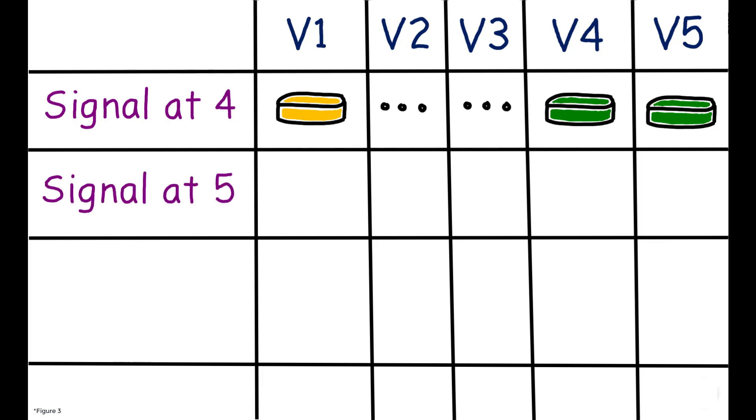The signal at 5 group was identical to the signal at 4 group for the first three vaccines, but then received a new, but identical, yellow bracelet at vaccine 4. At vaccine 5, their yellow bracelet was exchanged for a green one.